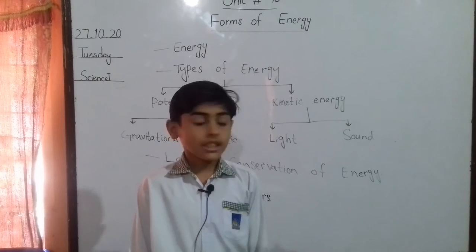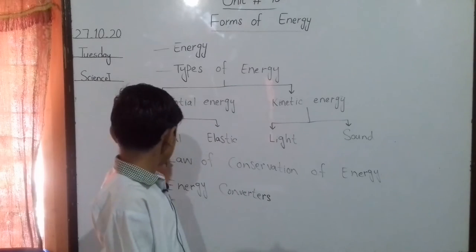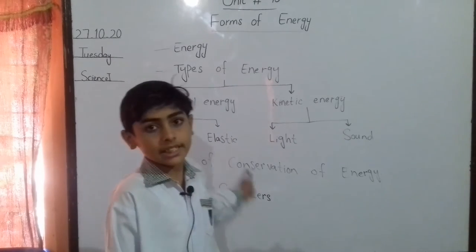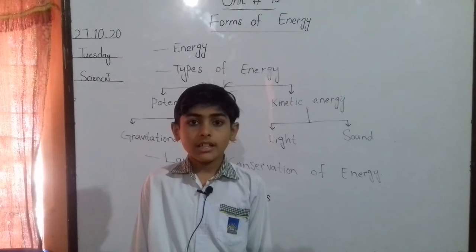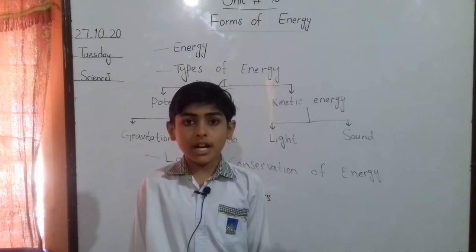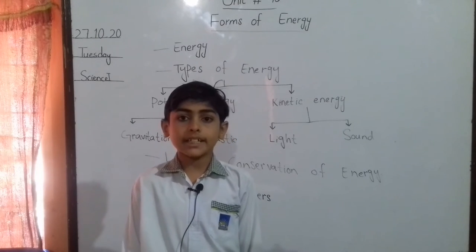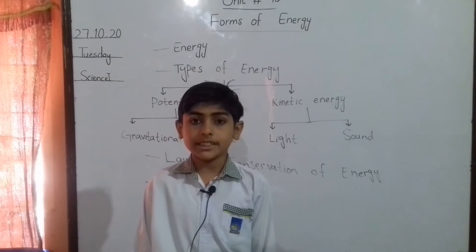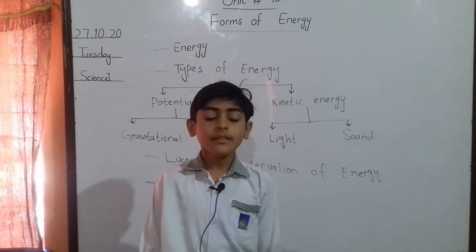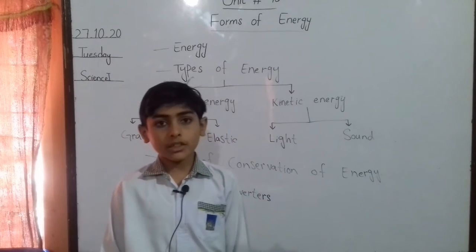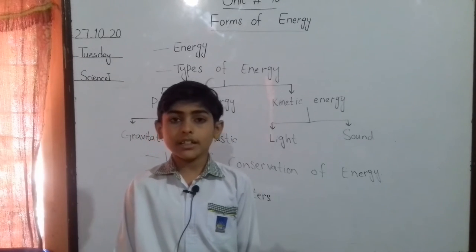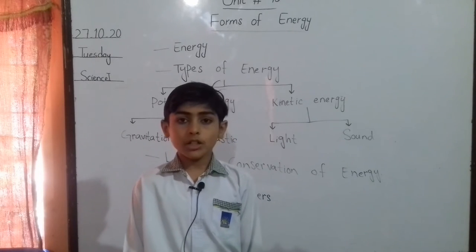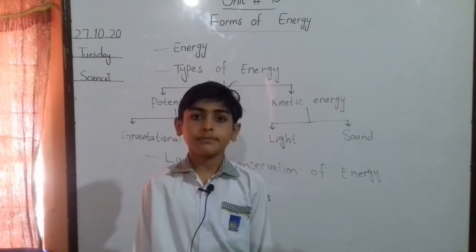Potential energy has two types: gravitational potential energy and elastic potential energy. The energy stored in an object due to its height is called gravitational potential energy. For example, a book resting on a table is at height, so the book has gravitational potential energy.